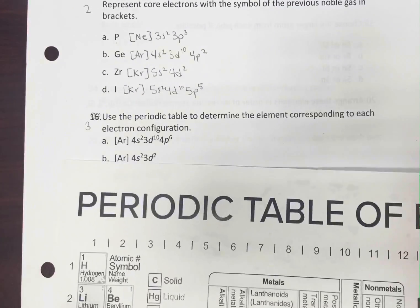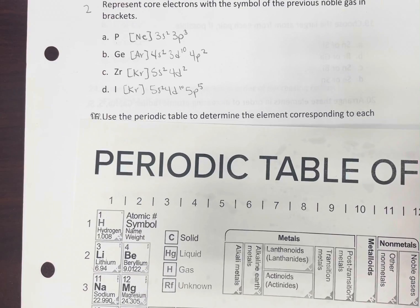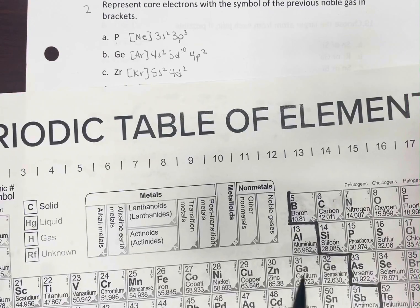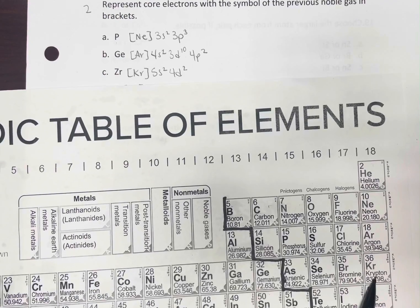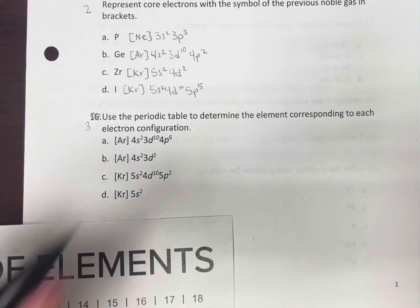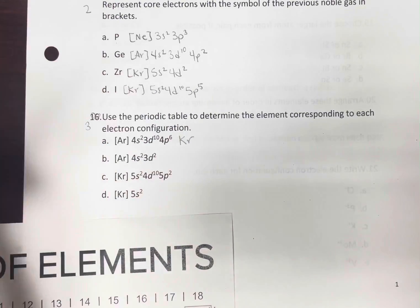So now we have 4s2, 3d10. That takes us to zinc, 4p6. So that gets us to krypton. Just following the roadmap.